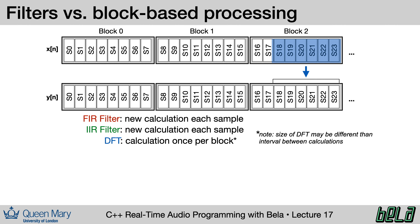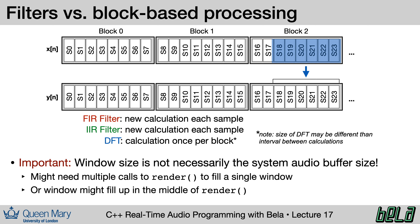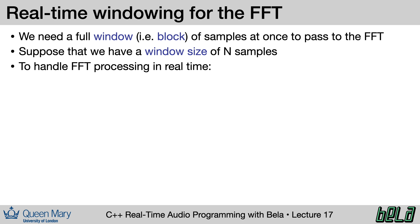One other very important note is that the size of our window is not necessarily the same thing as our real-time audio buffer size. Our render function is not called every sample but once per block of samples. The size of that block, which is given to us by the system, has no relation to the size of the windows or the frequency of the calculations in our audio processing system. We might need multiple calls to render before we have a single window of signal to process, or a window might fill up somewhere in the middle of a call to render.